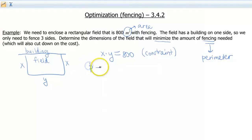So how do we find the perimeter of a rectangle, or the perimeter of any object? You just add up all the sides. So in this case, that's gonna be 2x plus y.